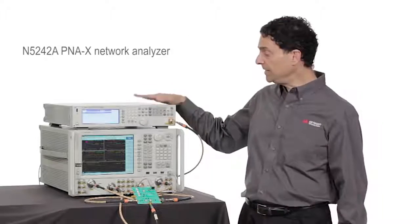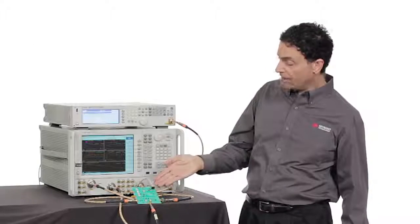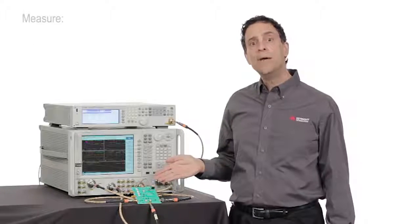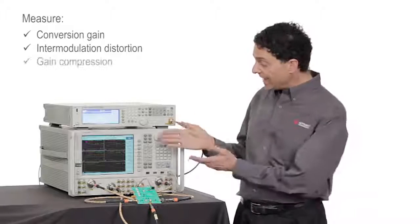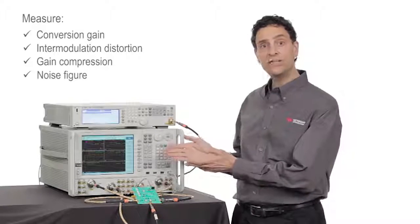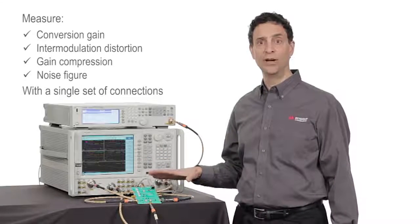I'm standing next to a PNA network analyzer with a simple single-stage RF downconverter. I'm measuring conversion gain, intermodulation distortion, gain compression, and noise figure. And this is all being done with a single set of connections to the converter.